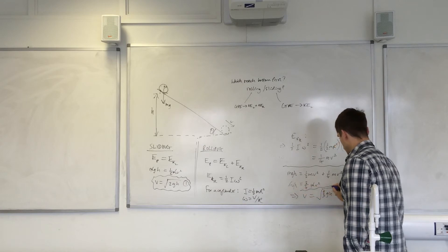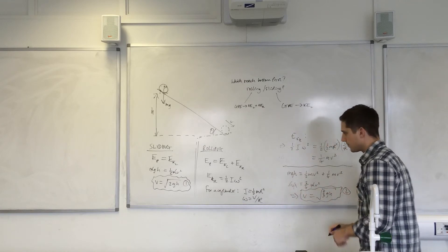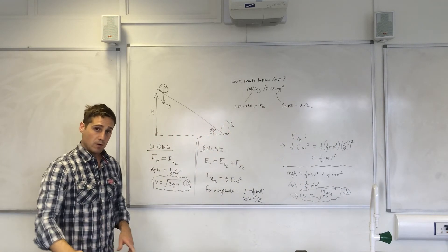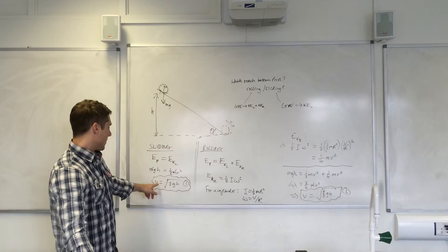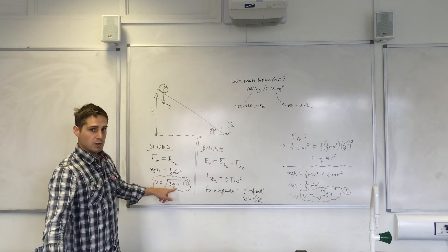So that's our second equation. So let's compare our equations then. The velocity here of the object will be equal to the square root of 2gh. The velocity over here is the square root of four-thirds gh.